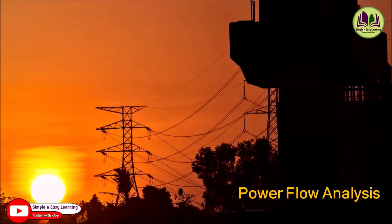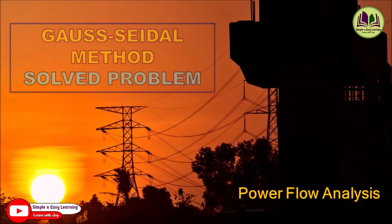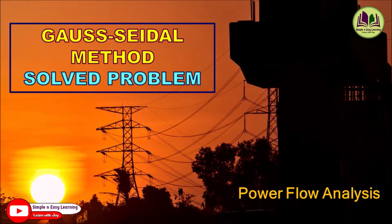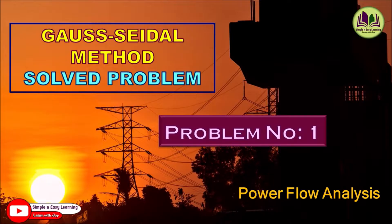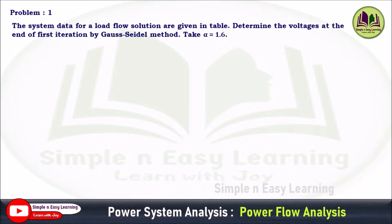In this video, we are going to discuss the Gauss-Seidel method, problem number one. The system data for the load flow solution are given in a table. Determine the voltages at the end of the first iteration by the Gauss-Seidel method. Take the acceleration factor alpha equal to 1.6.